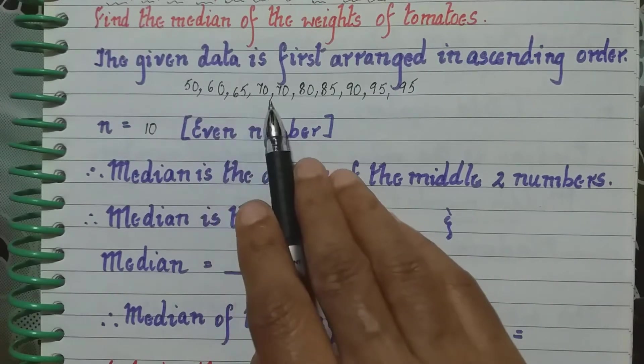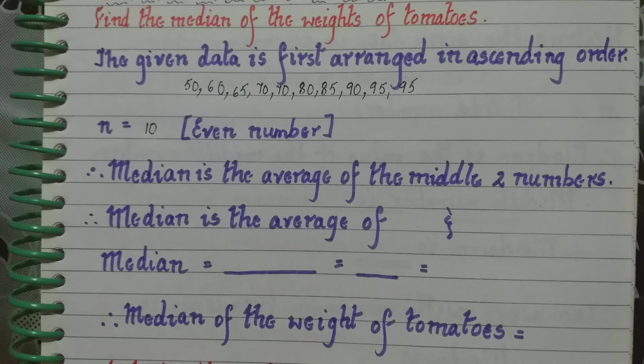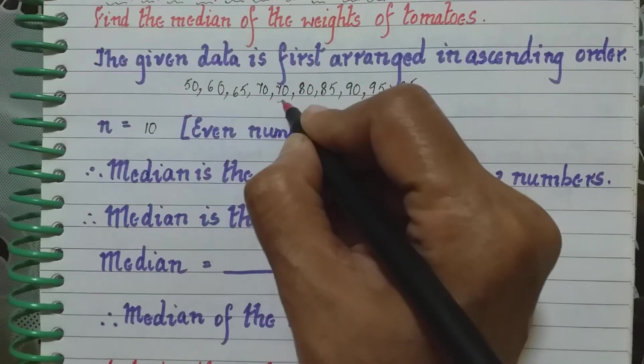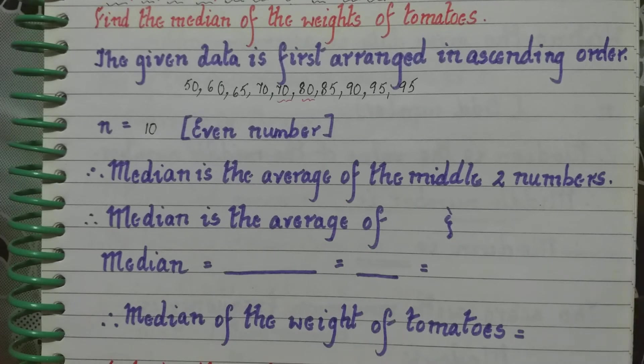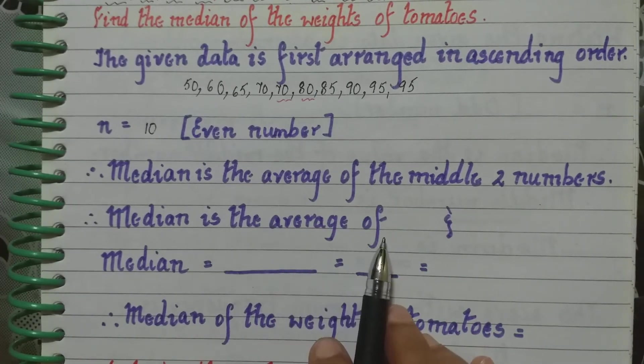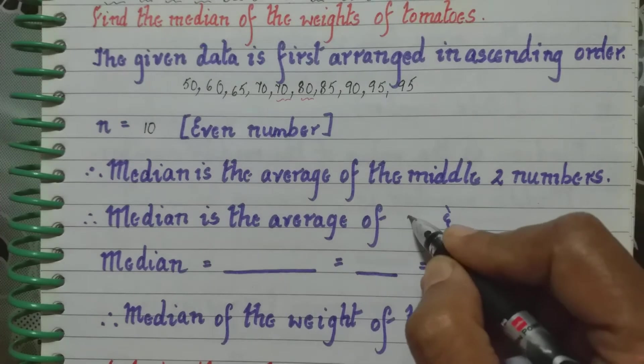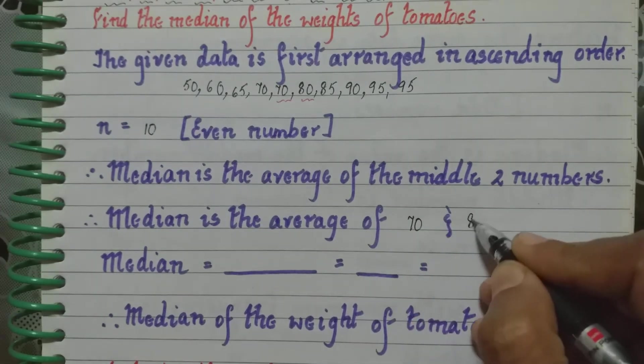So we see here, which are they? 1, 2, 3, 4, 5. The fifth one is here and this is the sixth one. So 70 and 80. So median is the average of 70 and 80.